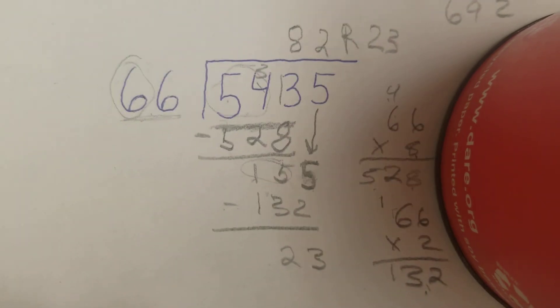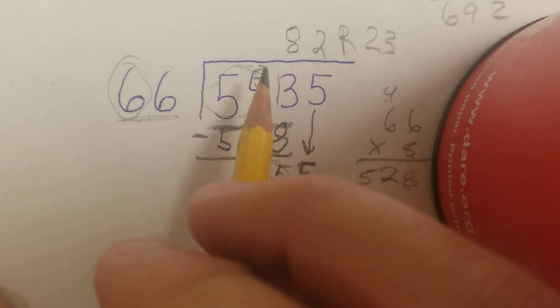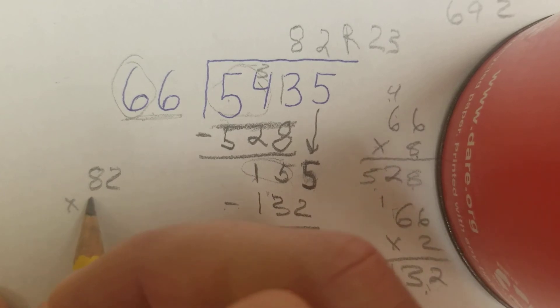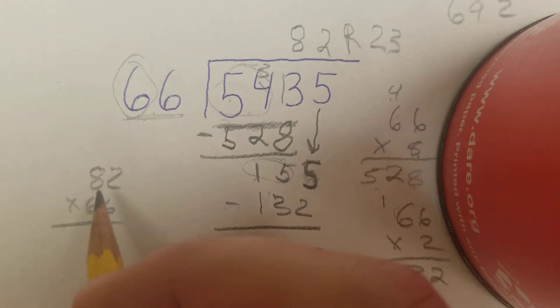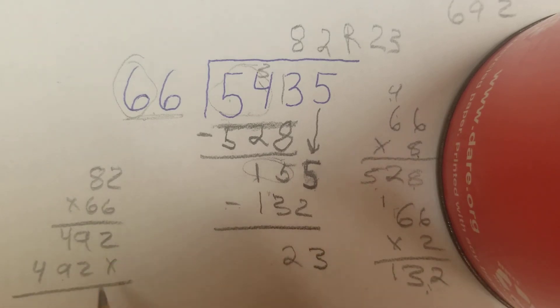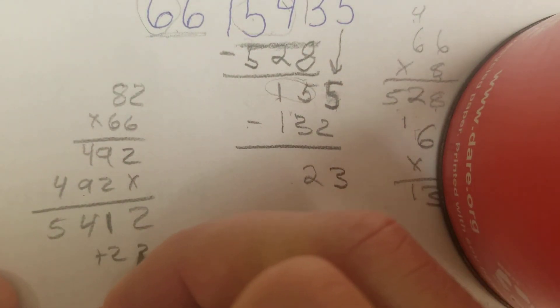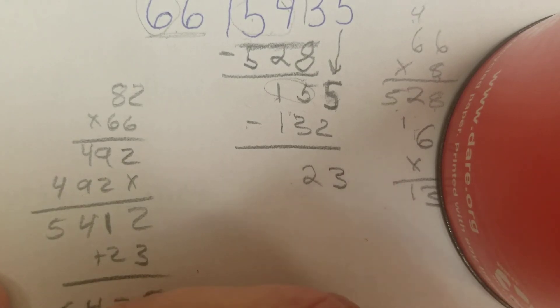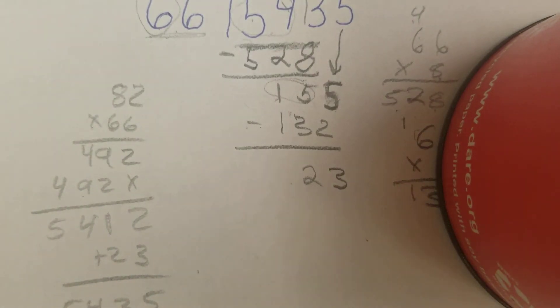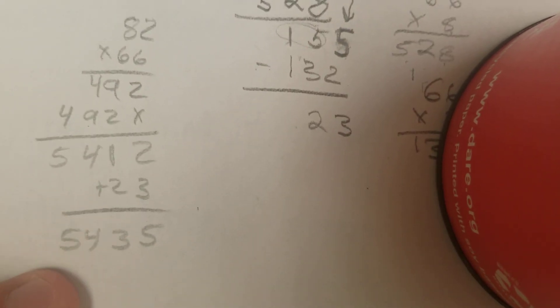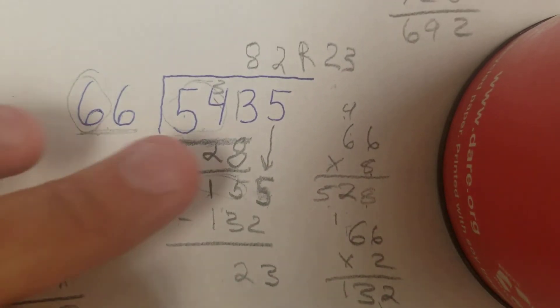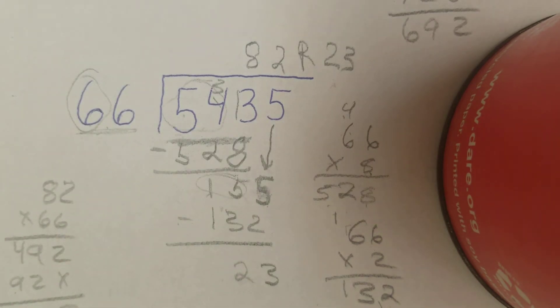To check this, I'm going to do 82 times 66. 6 times 2 is 12. 48, 49. It's going to be 492. I'm going to add. Carry my 1. It's 54, 12. My remainder is 23. I have to add in my remainder of 23, which gives 5, 4, 3, 5, which matches what we started with. So 82 remainder 23 is correct.